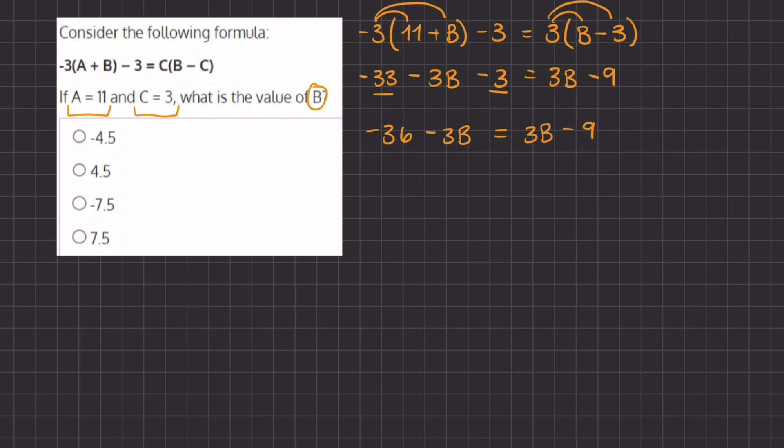Now we're going to move the coefficients with b values to one side and all of our numbers to the other. So we are going to add this 3b to both sides and we're going to add 9 to both sides.